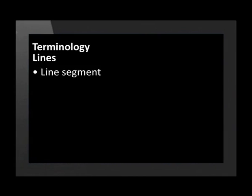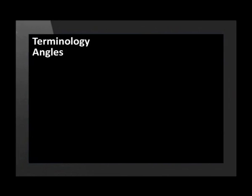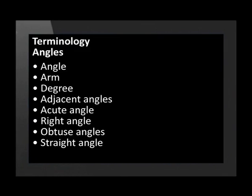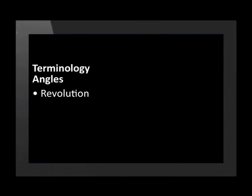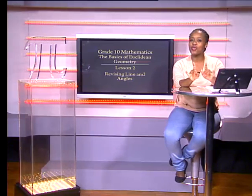That's why it's so important to know your definitions. We will work with theorems throughout the series. Today we will revise these definitions and terminology which you should have learned in previous grades. This is the terminology we will use when talking about lines: line segment, ray, parallel lines, perpendicular lines, bisecting lines, equidistant, intersection, transversal. We will also look at definitions related to angles such as angle, arm, degree, adjacent angles, acute angle, right angle, obtuse angles, straight angle, reflex angle, revolution, complementary angles, supplementary angles, and vertically opposite angles.